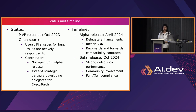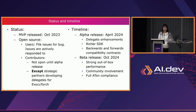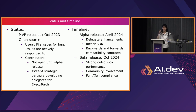Where we are now: we announced the ExecuTorch MVP release in October this year during the PyTorch conference, and it's already available in open source. Users are welcome to try it out and file issues or bugs. For contributors, it's not open yet to alpha release except for strategic partners developing delegates. We plan to do an alpha release in April 2024, targeting delegate enhancements, richer SDK, and backward-forward compatibility contracts. We also plan a beta release in October 2024 with strong out-of-box performance, community involvement, and full ATen compliance.